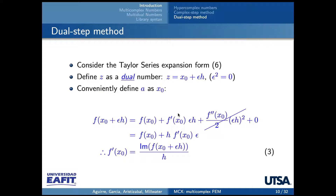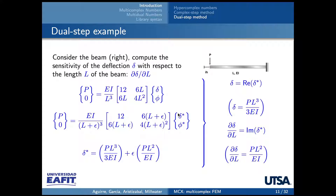The dual step method is very similar to the complex step method. The only difference is that epsilon squared is equal to zero, so high-order terms in the Taylor series expansion are going to be zero. The derivative can be found by evaluating the imaginary part of the dual number divided by h, and the result is exact. In the same beam example, when we replace our value of L with the dual perturbation, the deflection in the real part is PL cubed over 3EI — the exact solution — and the imaginary part is the exact derivative of the deflection with respect to L.